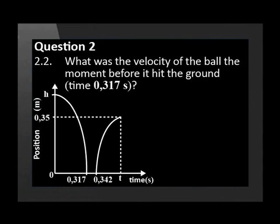What was the velocity of the ball the moment before it hit the ground? Time 0.317 seconds. What was the velocity of the ball the moment after leaving the ground? Time 0.342 seconds.